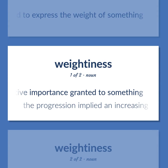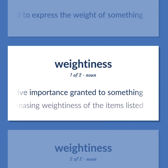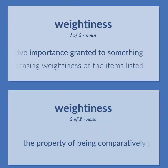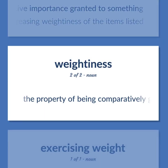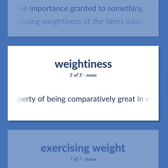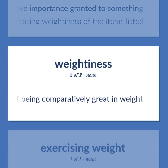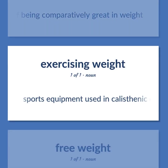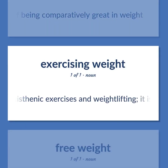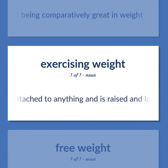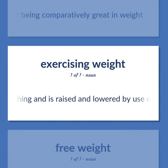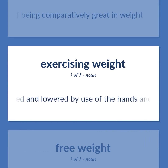Weightiness: The progression implied an increasing weightiness of the items listed. The property of being comparatively great in weight. Sports equipment used in calisthenic exercises and weightlifting — it is not attached to anything and is raised and lowered by use of the hands and arms.